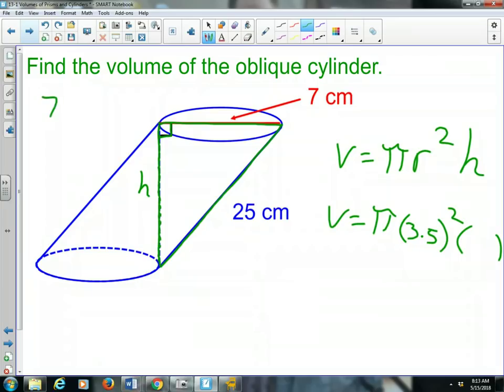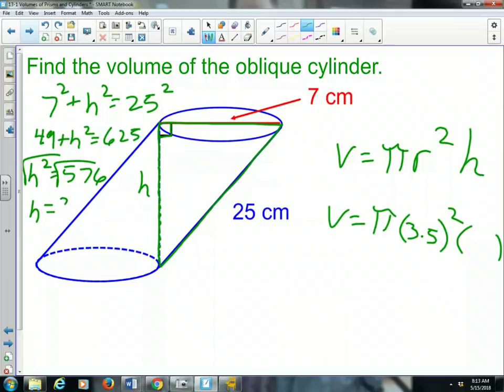We'd get 49 plus height squared equals 625. Subtract 49, h squared equals 576. Square root our height, so h equals 24. Our height is 24 centimeters. So 24 goes in for h.